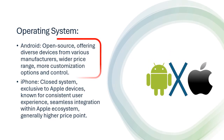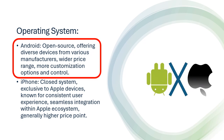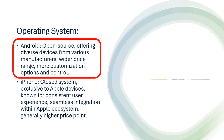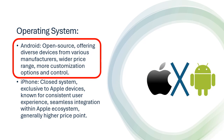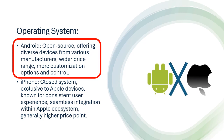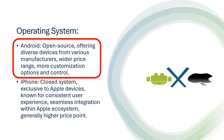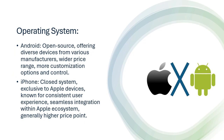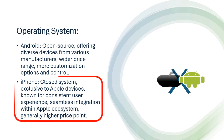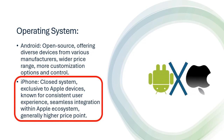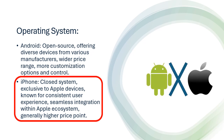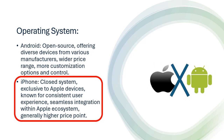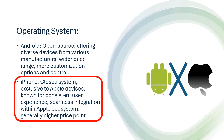Operating System: Android is open source, offering diverse devices from various manufacturers, a wider price range, and more customization options and control. iPhone uses a closed system, exclusive to Apple devices, known for consistent user experience and seamless integration within the Apple ecosystem, but at a generally higher price point.